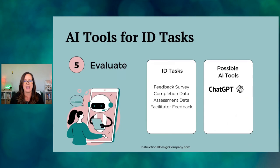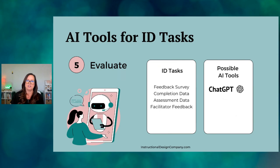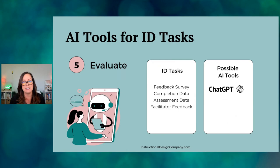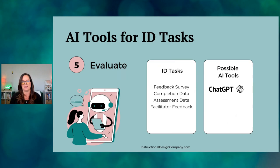Lastly, we've got the evaluate phase — feedback surveys, completion data, assessment questions, and facilitator feedback. ChatGPT is a great tool here. You can take data out of a survey — download it to a CSV file — grab all that data and plug it into ChatGPT and ask it to summarize the key themes. In a matter of seconds, all of that data has been categorized and summarized. You can really synthesize information quickly.